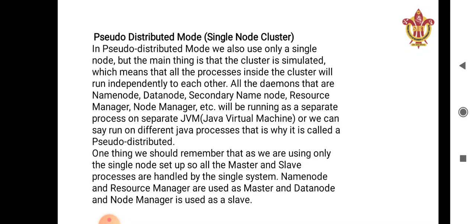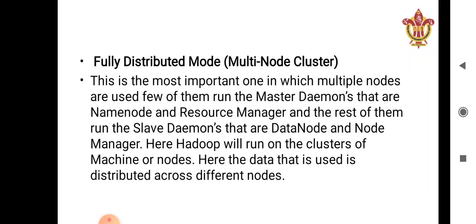Since we are using only a single node in pseudo distributed mode, all master and slave processes are handled by a single system. Name node and resource manager are used as master, and data node and node manager are used as slave nodes. In pseudo distributed mode, name node and resource manager work as master while data node and node manager work as slave. In summary, pseudo distributed mode works on a single node but all daemons work as separate processes on a single Java Virtual Machine.